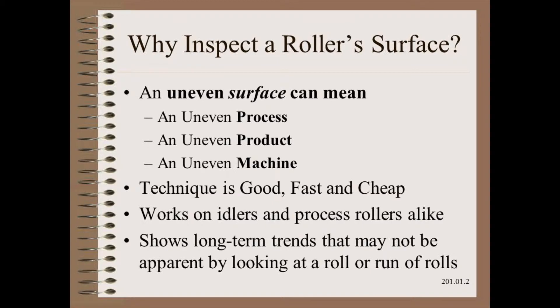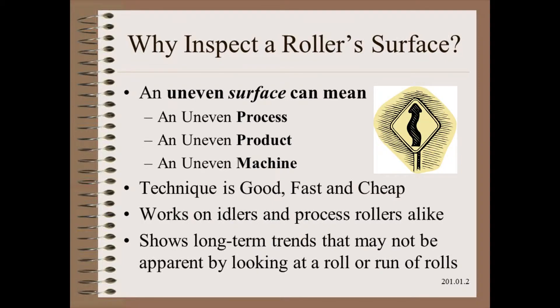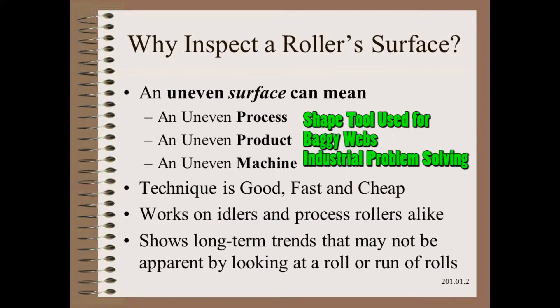Or, it might help verify a problem that you suspected from other evidence. But the main utility is that it averages long-term trends that may not be easy to see from the snapshot data that is commonly available from touch labs and scanners. In other words, it shows us shape or profile. Shape is one of the most useful pieces of information for the industrial problem solver. Those wishing further information can review the modules on baggy webs and critical thinking.